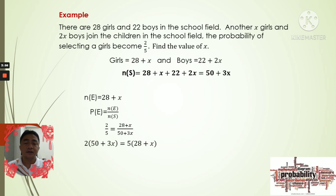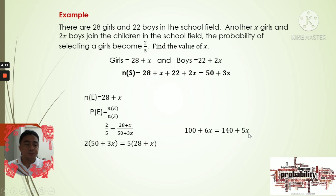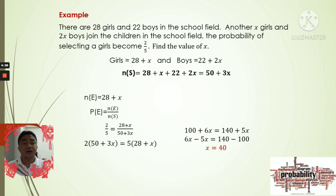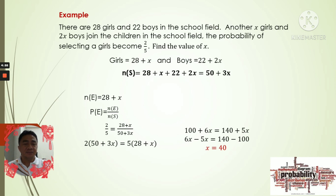We cross multiply: 2 times (50 plus 3x) equals 5 times (28 plus x). Distributing: 100 plus 6x equals 140 plus 5x. Transposing 5x to the left and 100 to the right: 6x minus 5x equals 140 minus 100, so x equals 40. Therefore, 40 girls and 80 boys joined the children in the school field.